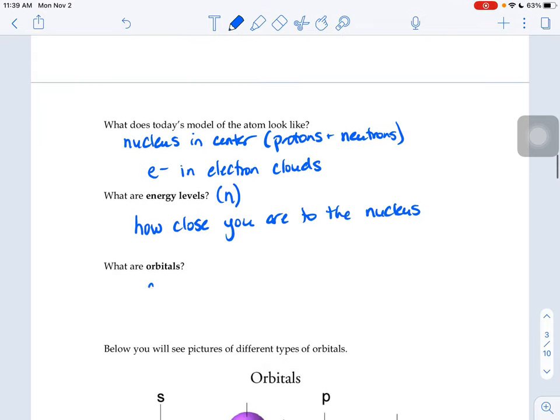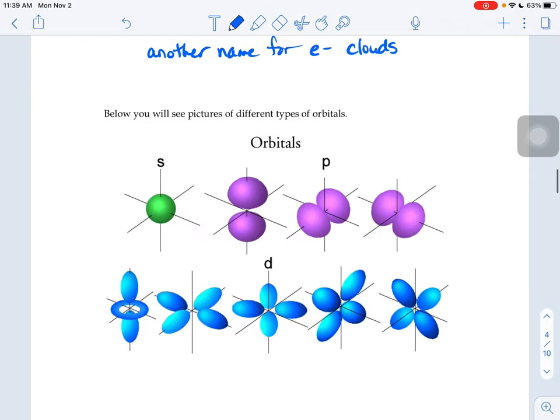Orbitals are another name that we use for electron clouds. So just like how you might look up in the sky and see a cloud and you'd say, you know what, that cloud kind of looks like a house, that one kind of looks like a dog. Scientists have noticed that electron clouds come in very specific shapes and they have different letters that they associate with them.